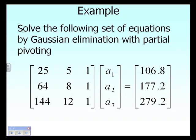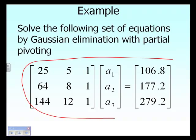In this segment we are going to take an example of how we can solve a set of equations by using Gauss elimination with partial pivoting. We are given three equations, three unknowns, and we want to use Gauss elimination with partial pivoting to find out what the three unknowns are.